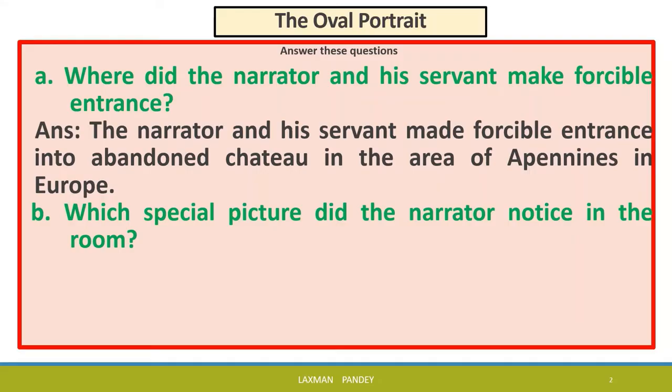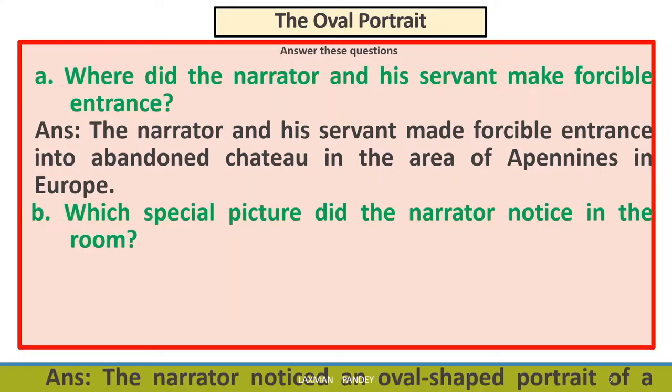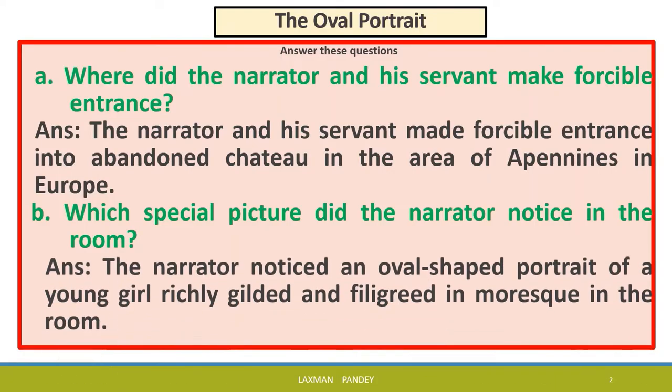Number B: Which special picture did the narrator notice in the room? The narrator noticed an oval-shaped portrait of a young girl, richly gilded and filigreed in moresque, in the room.